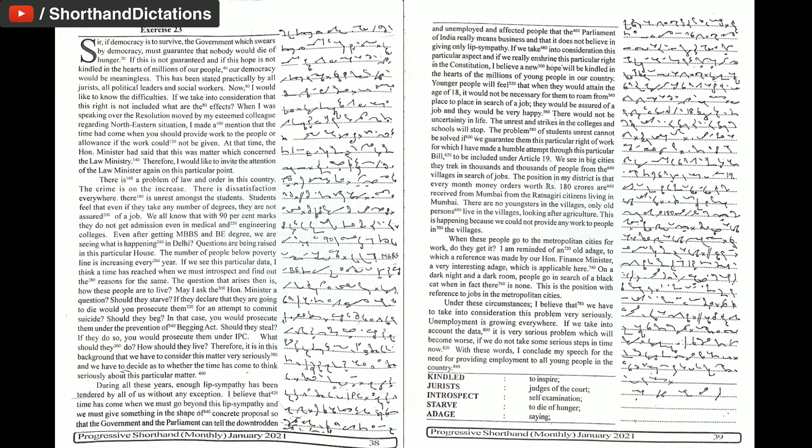The unrest and strikes in the colleges and schools will stop. The problem of students' unrest cannot be solved if we guarantee them this particular right of work for which I have made a humble attempt through this particular bill to be included under Article 19. We see in big cities, they track in thousands and thousands of people from the villages in search of jobs. The position in my district is that every month money orders worth Rs. 180 crores are received from Mumbai from the Ratanagiri citizens living in Mumbai. There are no youngsters in the villages, only old persons live in the villages looking after agriculture.